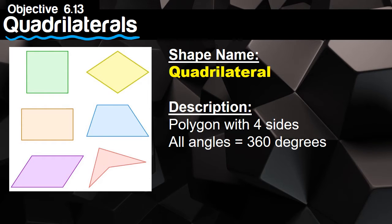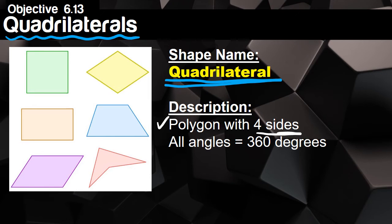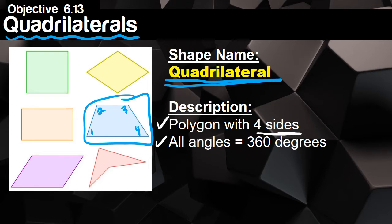We're figuring out what the word quadrilateral means. Our first shape — in your description, this is a polygon that has four sides. Any shape that has four sides we call a quadrilateral. For the second part, all the angles — if we labeled any quadrilateral with angle one, angle two, angle three, angle four — when you add them all together they equal 360 degrees.